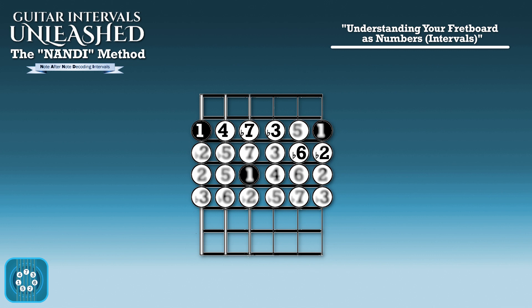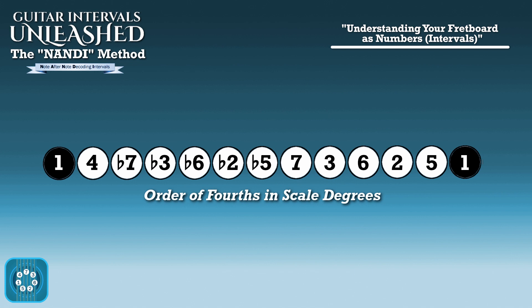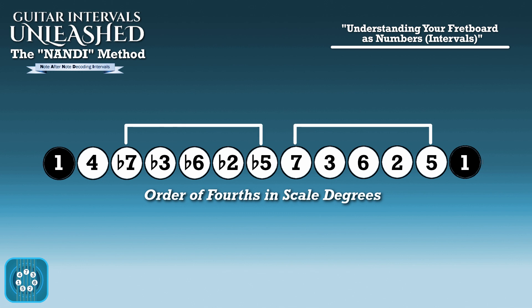If we were to look at just the order of all the scale degrees in fourths, we'll see it goes like this: 1, 4, b7, b3, b6, b2, b5, 7, 3, 6, 2, 5, 1. One important thing to note here is that the sequence 7, 3, 6, 2, 5 appears twice — once as flat scale degrees and once as natural ones.